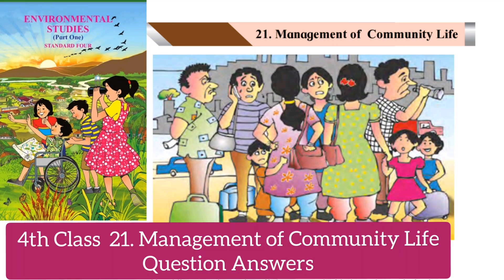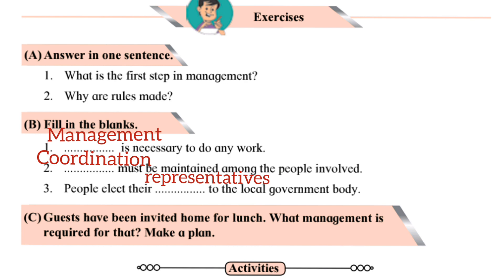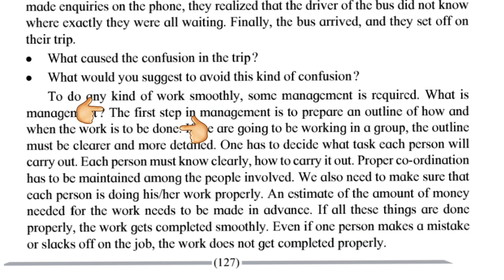My dear students of standard 4, today I shall be providing you the answer of chapter number 21, Management of Community Life, from 4th standard EVS part 1. Let's see the exercise A: answer in one sentence. First question: what is the first step in management? The answer is given on page number 127. The first step in management is to prepare an outline of how and when the work is to be done.